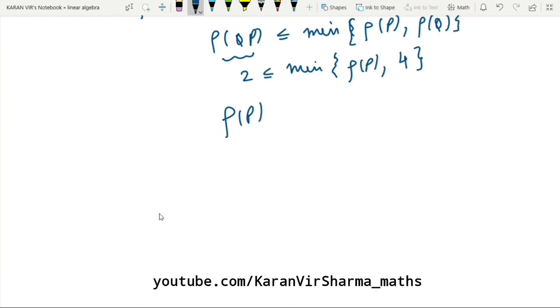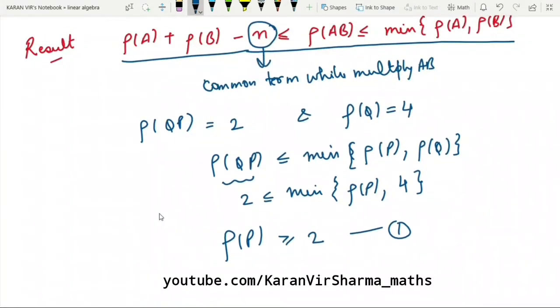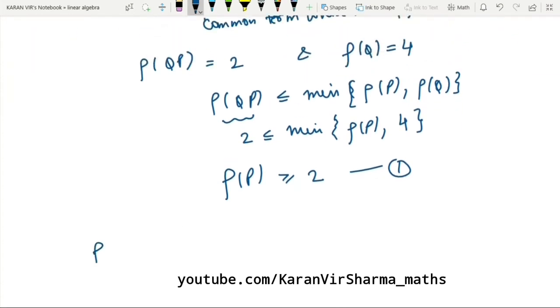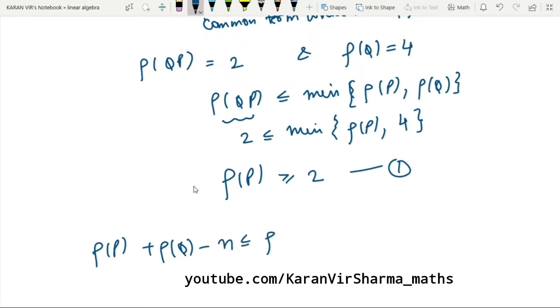Moreover, now we solve the left side equation. So rank of P plus rank of Q minus n would be less than equal to rank of QP.